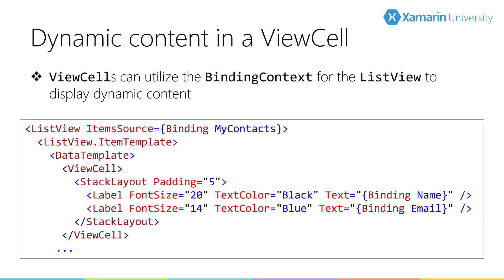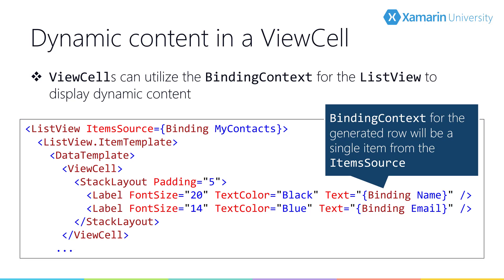Just like the built-in cells, the view cell will utilize the binding context to provide the dynamic portions of the data we want to display. We can add static pieces here as well, using labels to add some text. This approach is not quite as efficient as the built-in cell styles, as they rely on platform-specific cell styles, while view cells force the creation of a completely custom rendering.